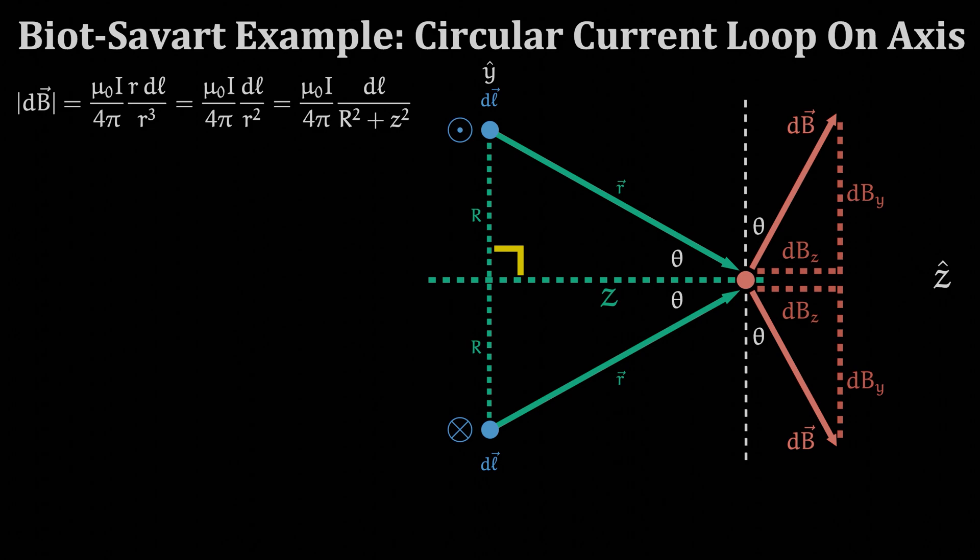In other words the only non-zero component of the B field when we add all of these pieces together will be the z component so that is all we need to focus on. Always look for symmetries like this to simplify your problems.